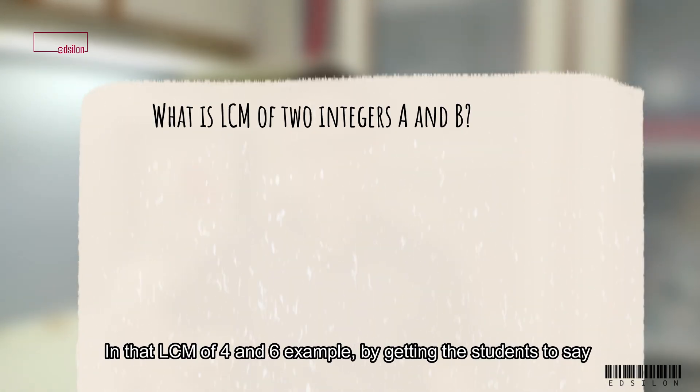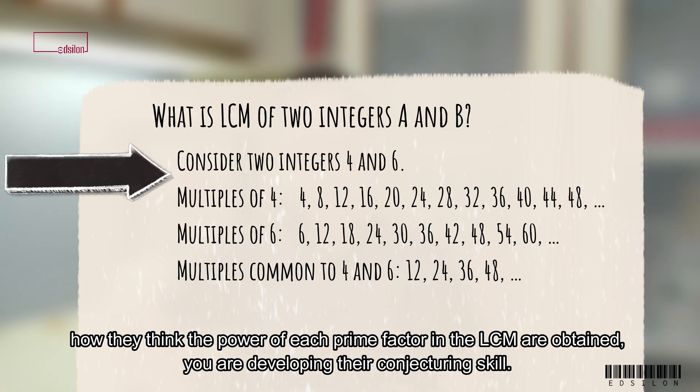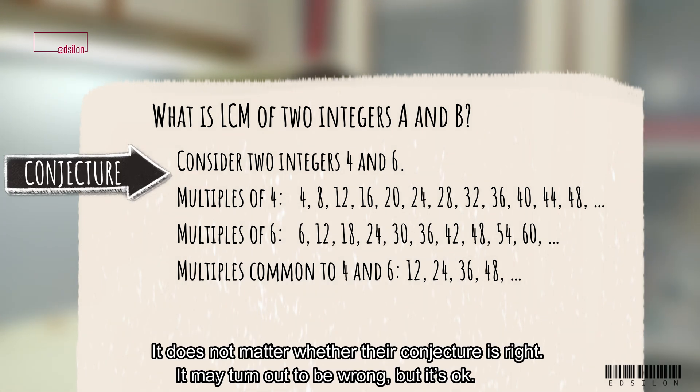In the LCM of 4 and 6 example. By getting the students to say how they think the power of each prime factor in the LCM are obtained, you are developing their conjecturing skill. It doesn't matter whether their conjecture is right.